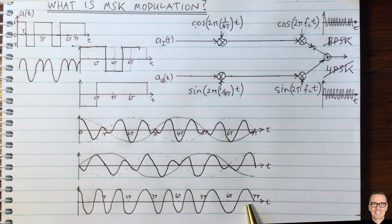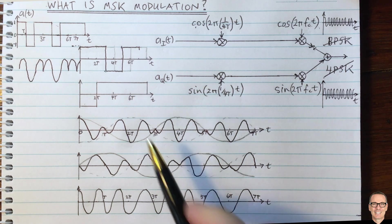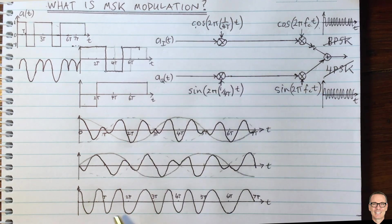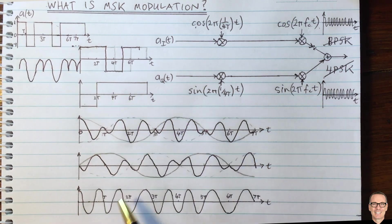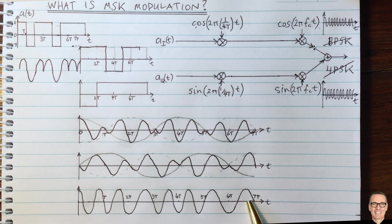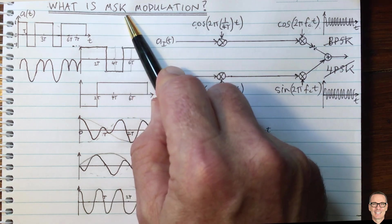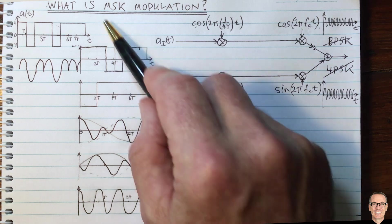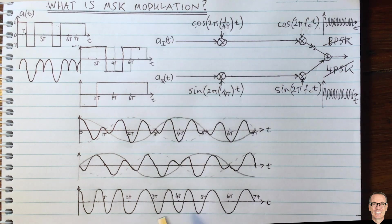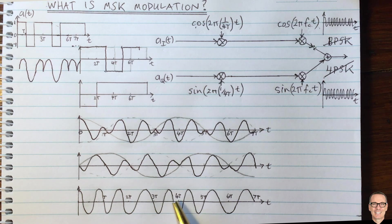Here's the final MSK waveform. Why is it called minimum shift keying? We certainly see the bandwidth advantage — no discontinuities mean much narrower bandwidth. The side lobes are much more suppressed in the frequency domain, which is a great benefit of MSK. We can understand the name by observing the phase at the symbol times.